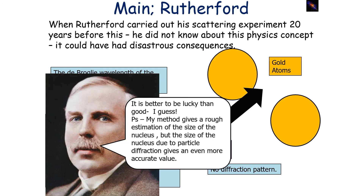This means Rutherford wouldn't have gained his observations which allowed him to deduce the existence of the nucleus. It was purely happenstance that he picked a suitable atom for the alpha particles to pass through without causing them to diffract. Interestingly, firing alpha particles at gold atoms gives a rough estimation of the size of the nucleus via electrostatic repulsion, but the size of the nucleus determined via particle diffraction gives an even more accurate value than Rutherford's scattering experiment.